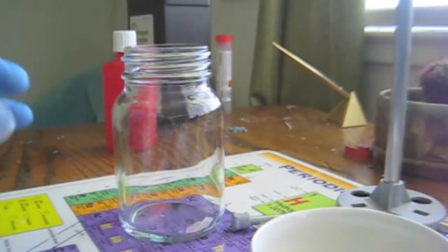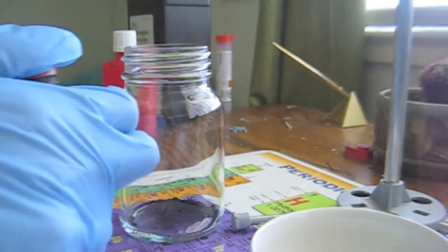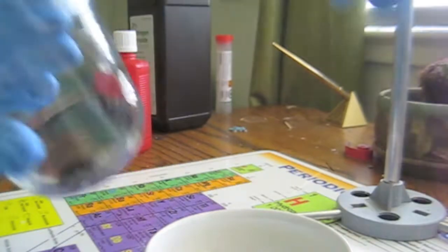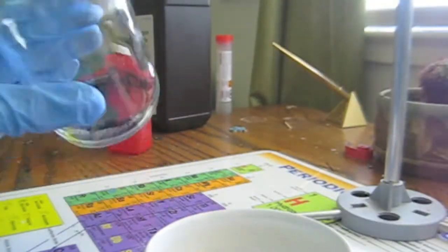Let's get started. First we'll take three scoops of potassium permanganate and put them in a small jar. Then we'll take two scoops of sugar and add them to the jar. We'll mix everything together really good, crushing any big chunks.